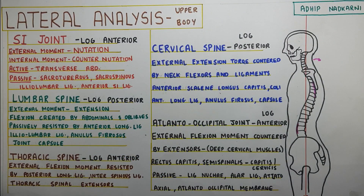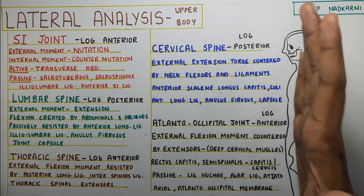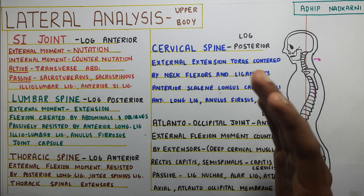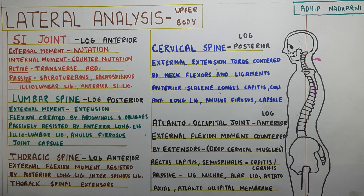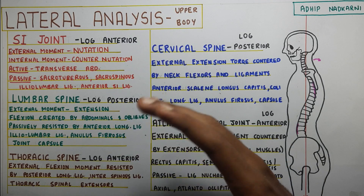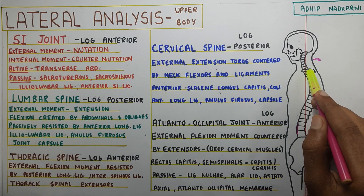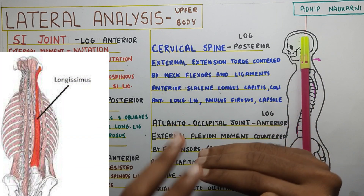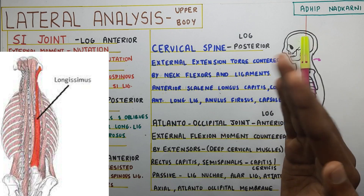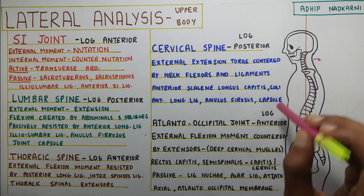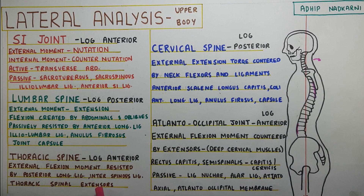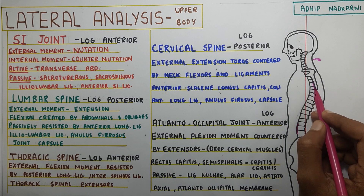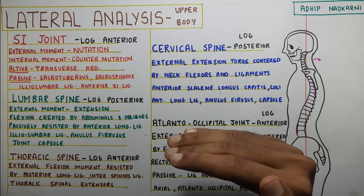Going on to the thoracic spine, the line of gravity passes anteriorly. So the external movement will be flexion, and all the trunk muscles will be creating that extension movement. This will be done by all your spinal and thoracic extensors. So gravity is pulling your spine into flexion, and all the extensor muscles act to get back into extension. The ligaments here will be the posterior longitudinal ligament and the interspinous ligament, which prevent that flexion movement.